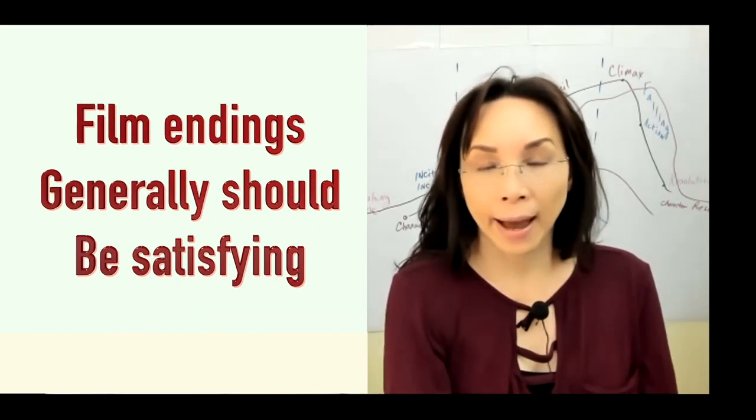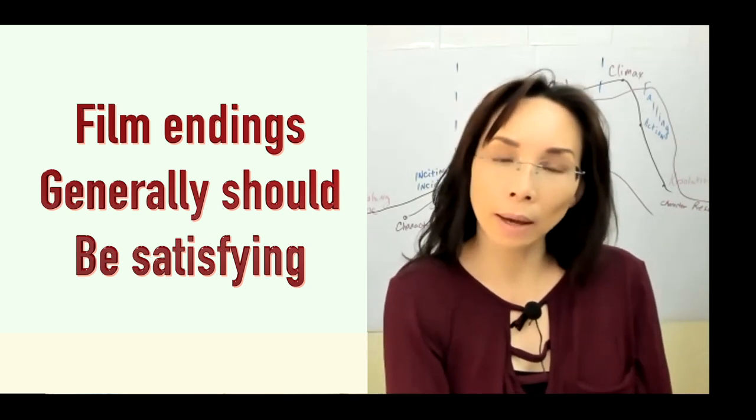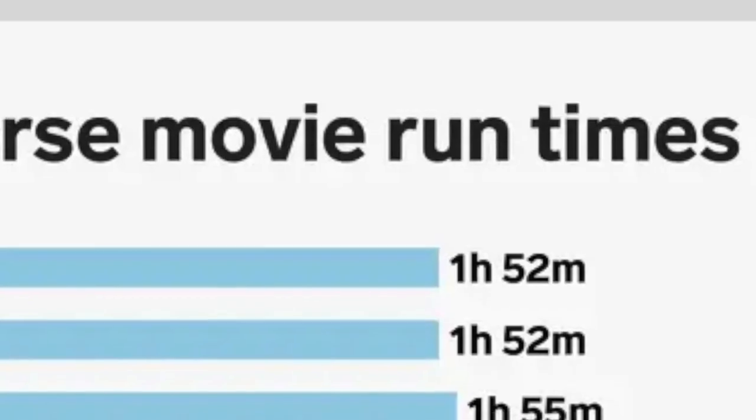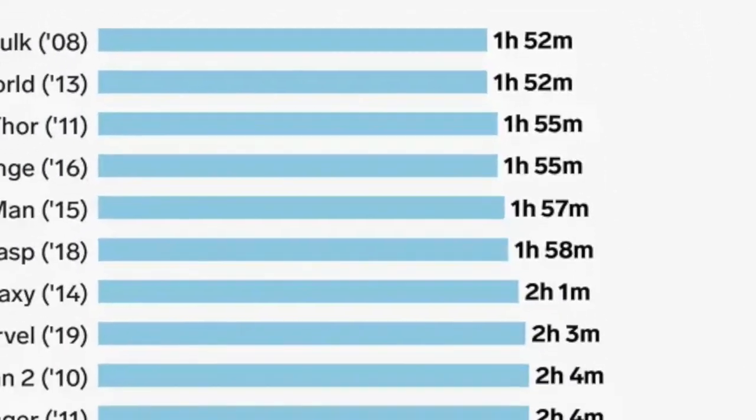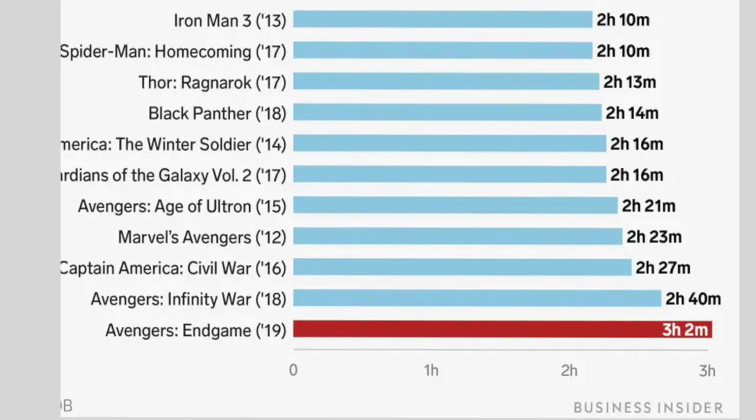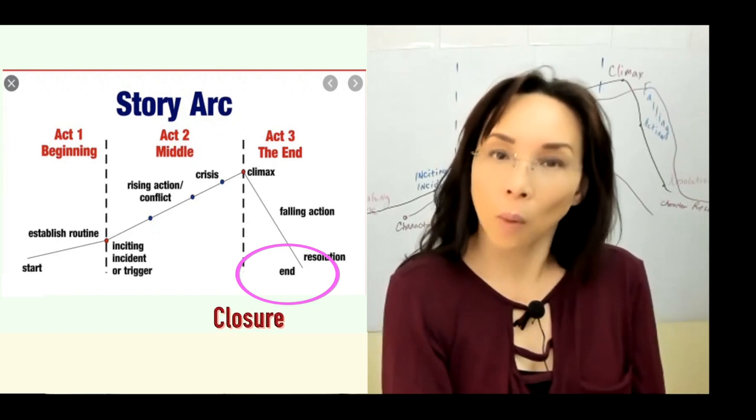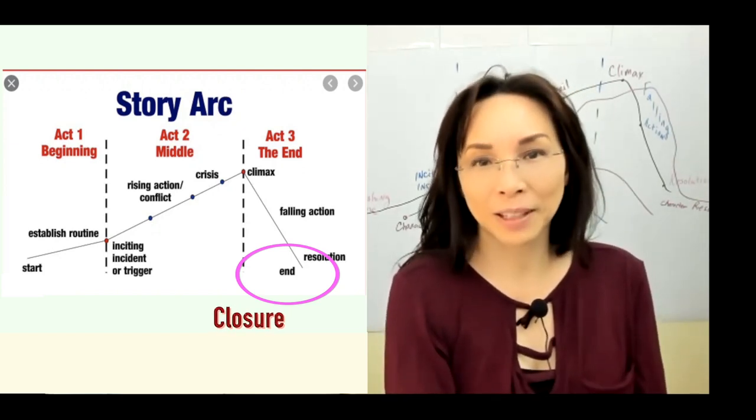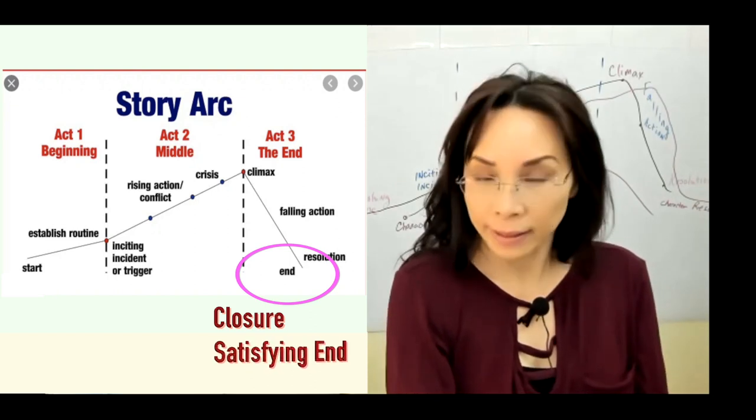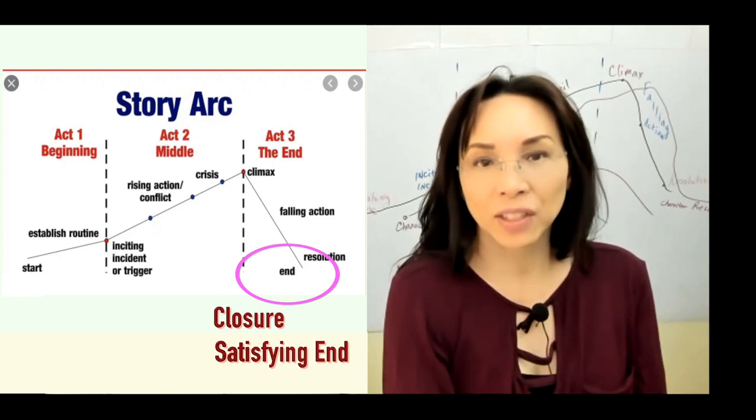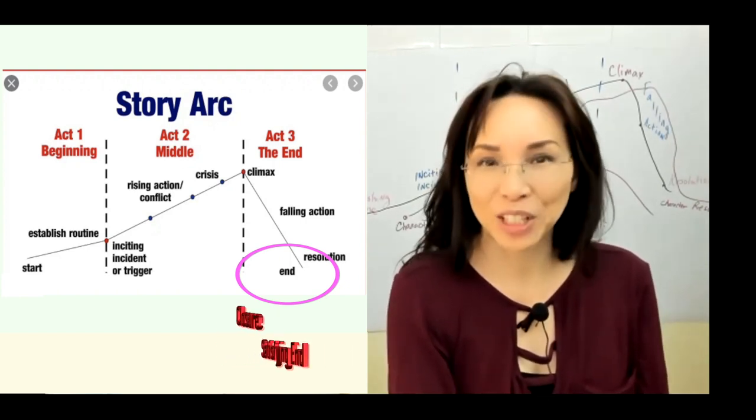You can absolutely have open-ended storylines but the main storyline or at least the main reason why your audience is sitting there for an hour and a half to two hours should have some kind of conclusion that allows your audience to feel as though that they have closure to why they were in that seat for an hour and a half to two hours to begin with and they should be satisfied with what they've seen and what has happened to the main characters and situations that are set up in that feature.